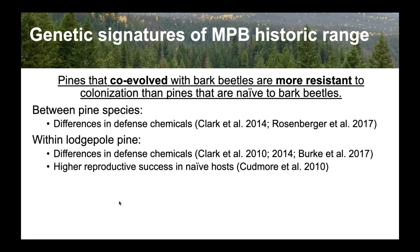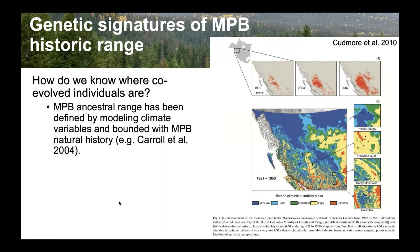But how do we know exactly where these co-evolved individuals are? Historically, there's been evidence of red trees and we can use bark fossils and look at galleries in old wood to date historic events from hundreds of years ago. More recently, we can use site data on actual records, and we combine this with climate variables to bound what we think the historic suitable range is for mountain pine beetle.